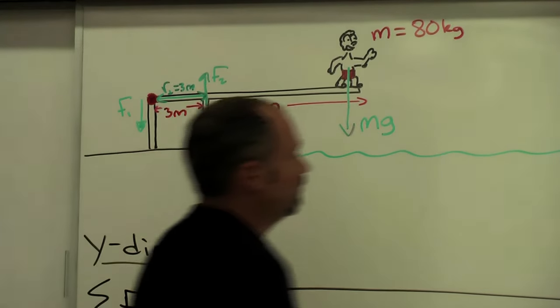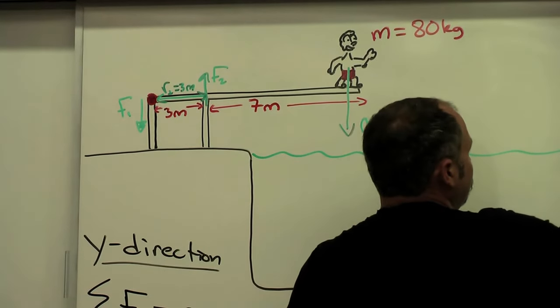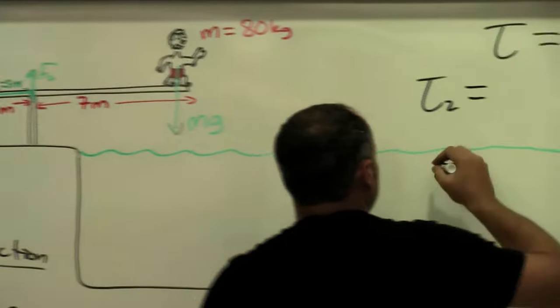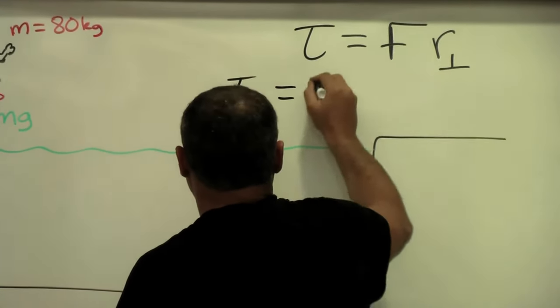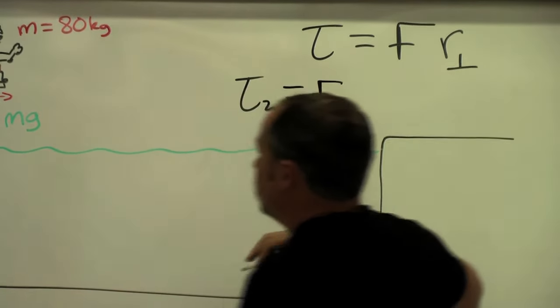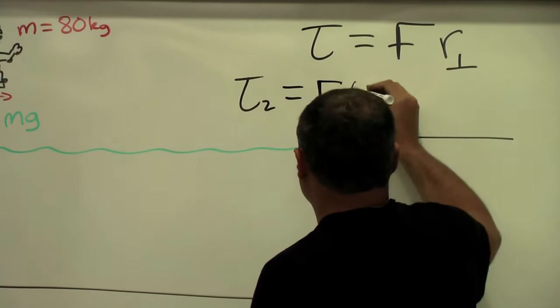In this case I'm talking about the torque provided by F2. That's this distance here which is three meters and it's perpendicular. So we can put that in. The torque from F2, I'll call it torque 2, well it's simply this force F2 multiplied by three meters.